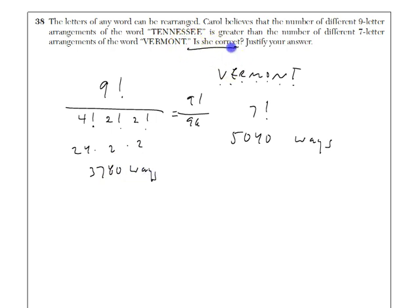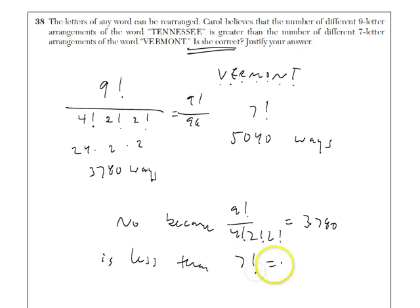And they want to know, is she correct? So you have to say, no, because nine factorial over four factorial, two factorial, two factorial is 3780, is less than seven factorial equals 5040. And you do want to write a little sentence there. Make sure you get full credit, not just have the two numbers. You need to make a conclusion. So is the conclusion correct? No. If you don't write that, if you just write the two things, you're actually going to lose some points.